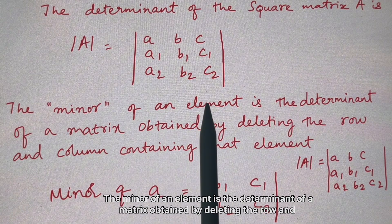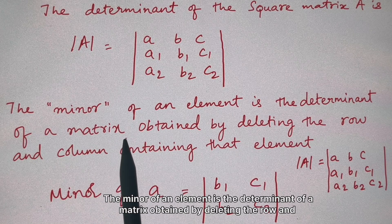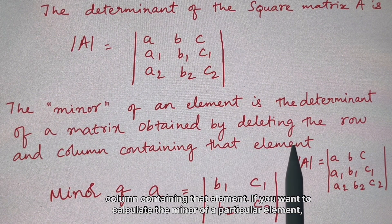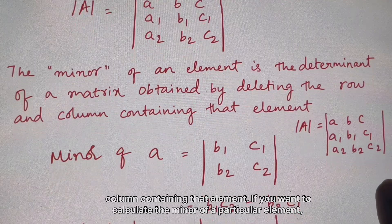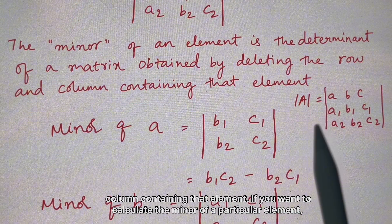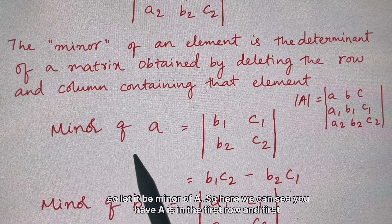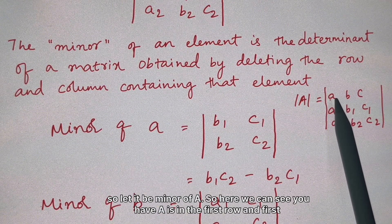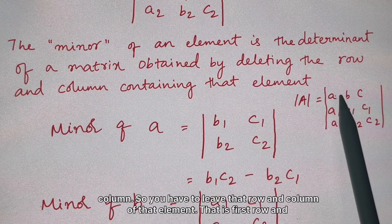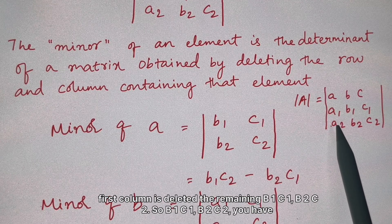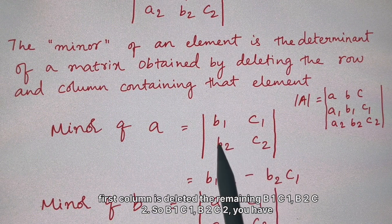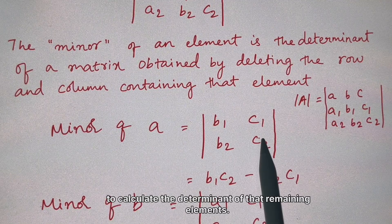The minor of an element is the determinant of a matrix obtained by deleting the row and column containing that element. To calculate the minor of element 'a', since 'a' is in the first row and first column, we delete that row and column, leaving the submatrix [b1, c1; b2, c2].